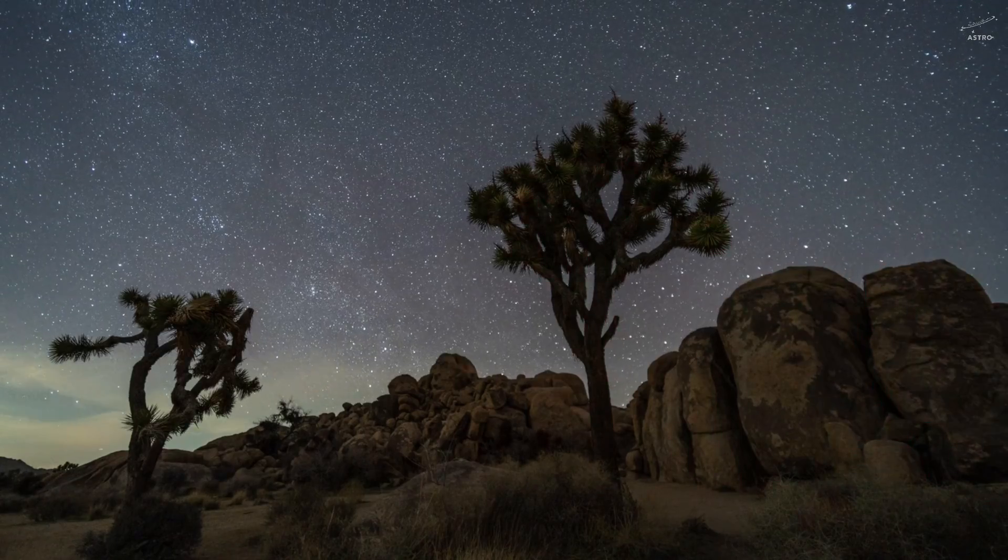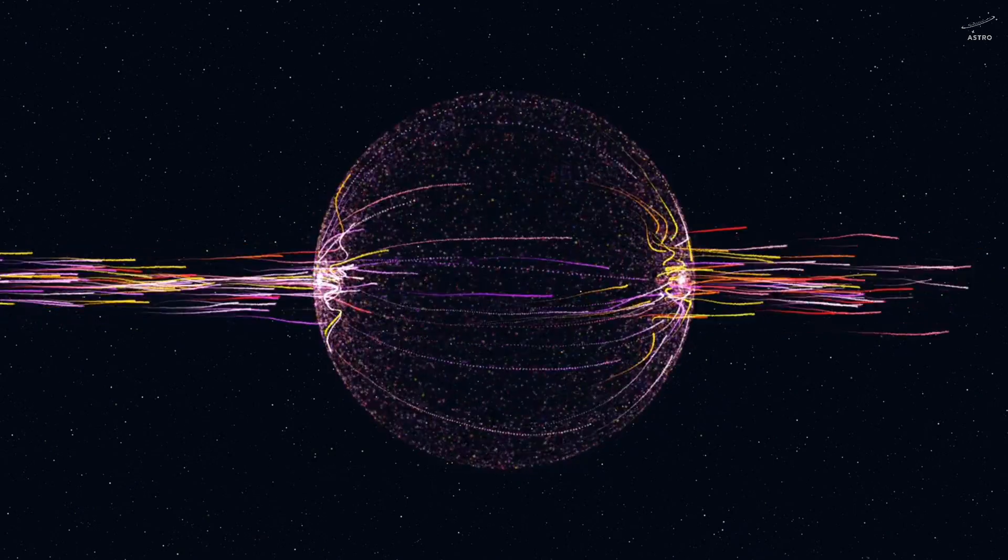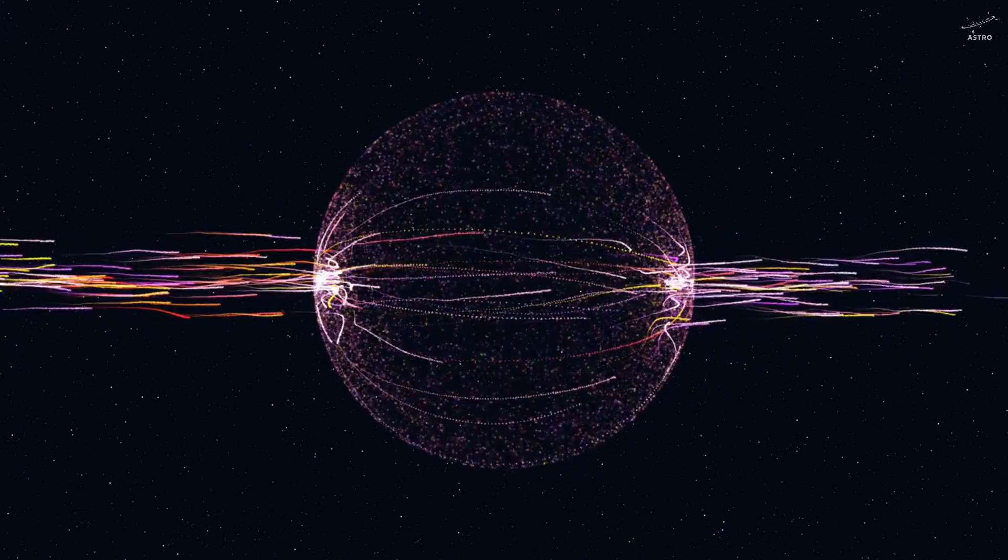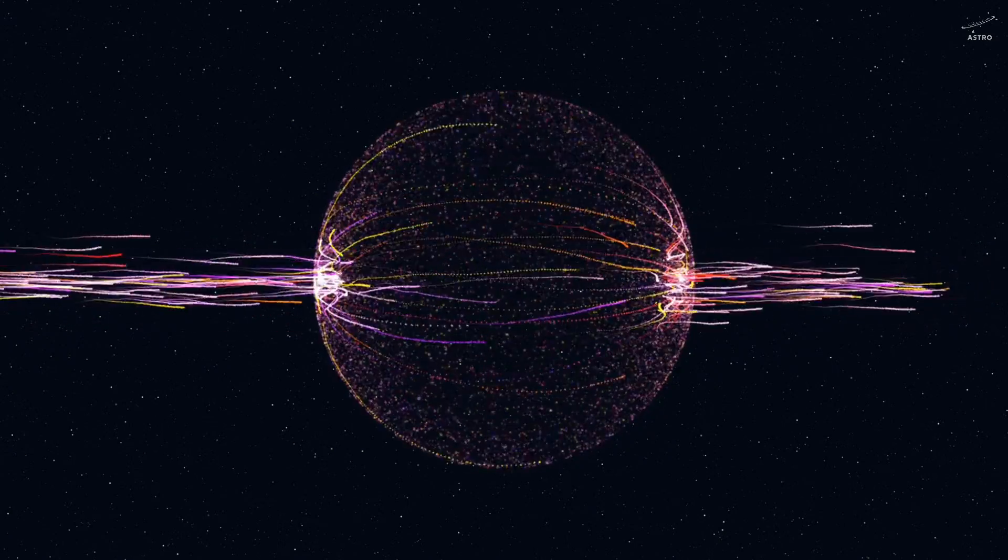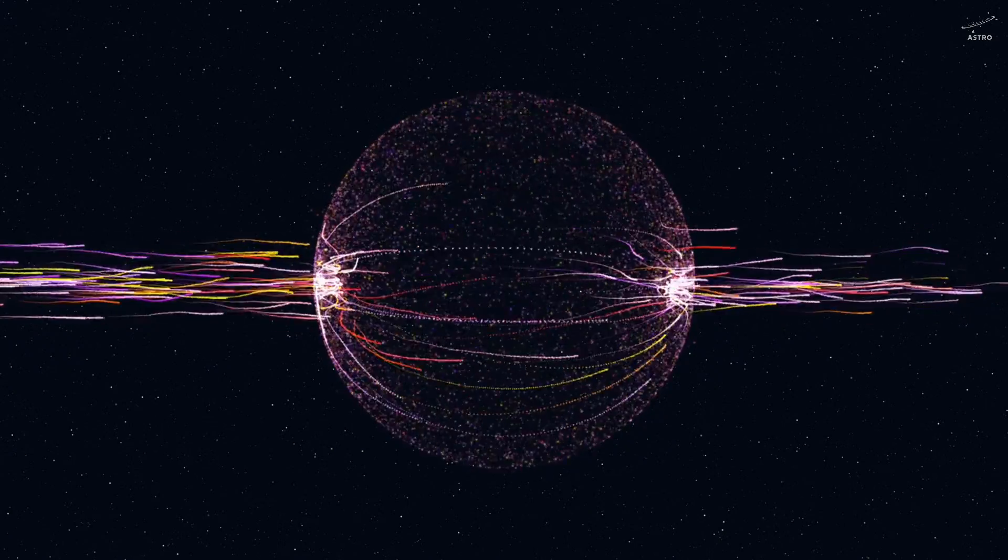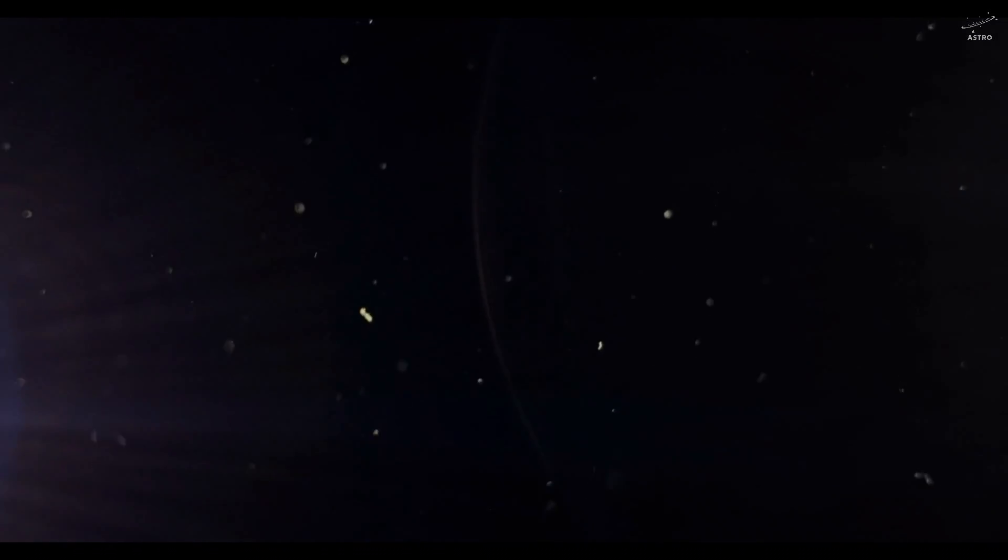In 1991, deep in the barren deserts of Utah, a group of scientists was scanning the sky using a special instrument called the Fly's Eye detector. And then they saw something unbelievable. A tiny particle, so small it was nearly invisible, yet it carried an amount of energy that defied all logic. This particle was moving at nearly the speed of light and carried an energy of 3 quintillion electron volts, equivalent to a tennis ball traveling at 100 kilometers per hour. But here's the catch. All that energy was packed into a single proton.